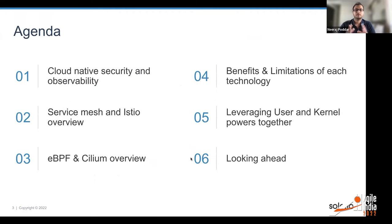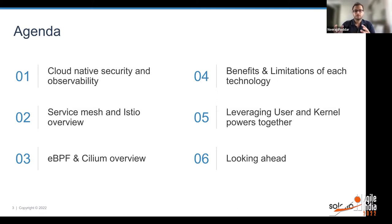The agenda today is going to talk about how these different technologies — whether it's eBPF and Istio, Service Mesh, or Cilium — how are they related and how we can harness the power together. I'm going to set the stage by giving some overview of where cloud-native security and observability is, what are the business challenges that people face with microservices, and how Service Mesh is solving them. We'll focus on Istio, but then move on to the functionality that eBPF provides. The aim here is to understand the benefits and limitations of each technology — nothing is perfect — and understand when to choose what and how to combine those powers.